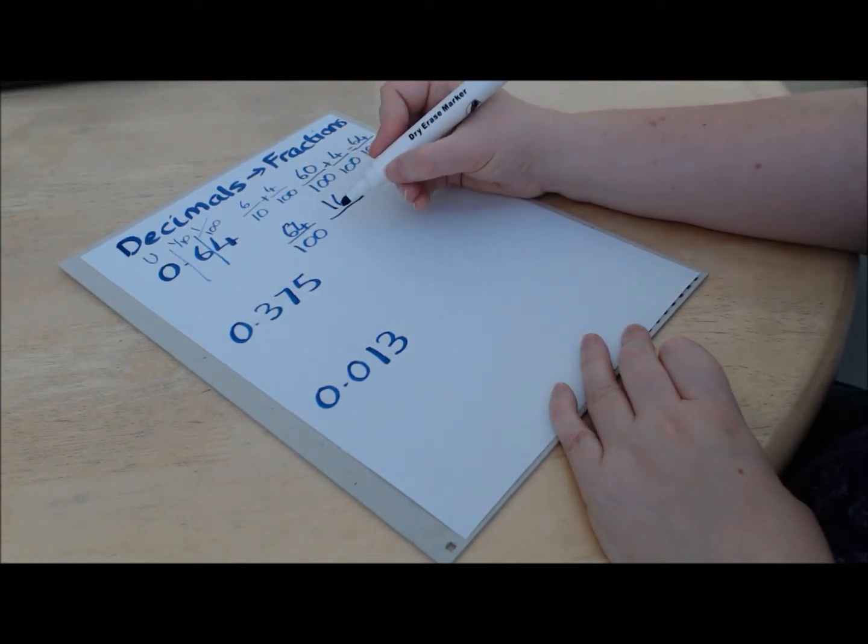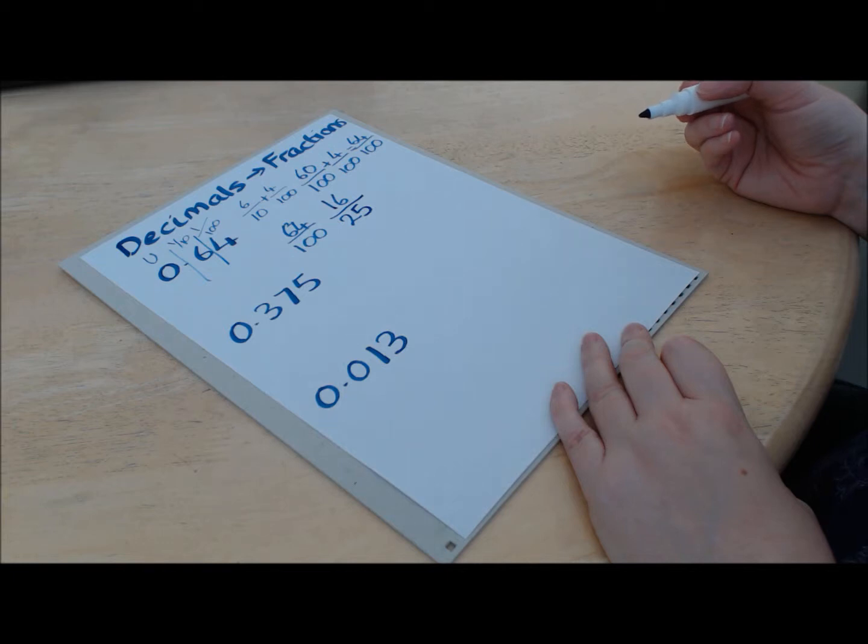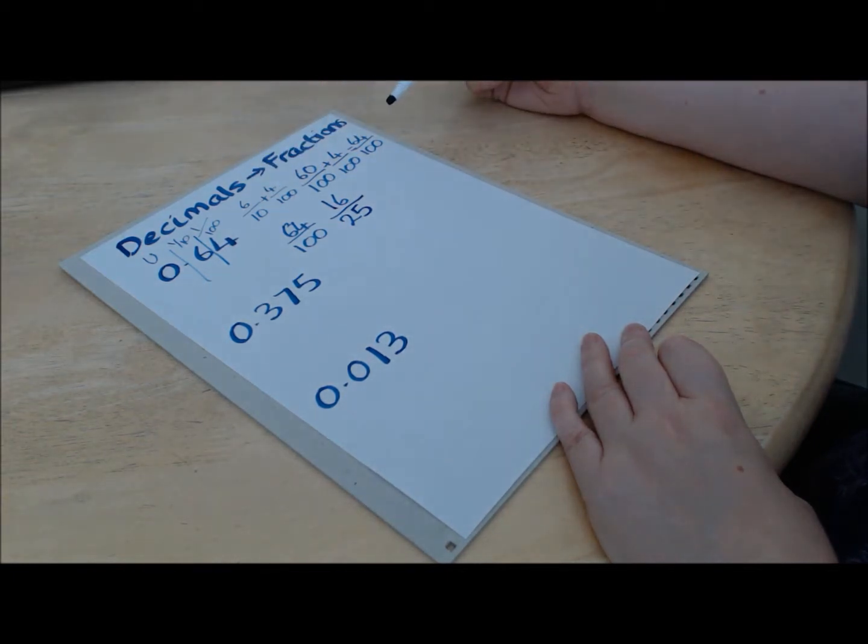And hopefully you know that 4s into 100 is 25 there. OK, so that's as simple as it can get. Now, we don't really want to have to go through all of this process every time.